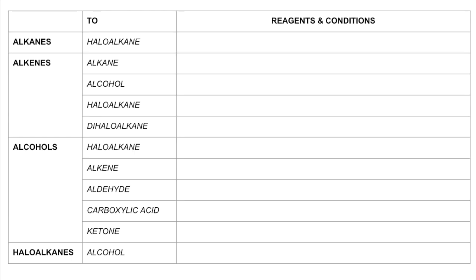This is a quick revision video on AS organic conversions. Working through a table, starting with how to go from a particular functional group to the one in italics in column two. For alkanes to haloalkane, you would react it with a halogen in the presence of UV light.